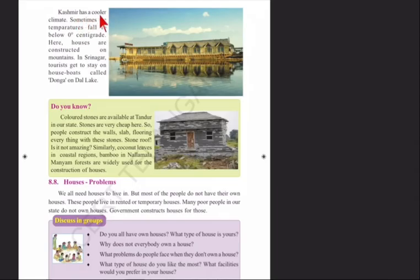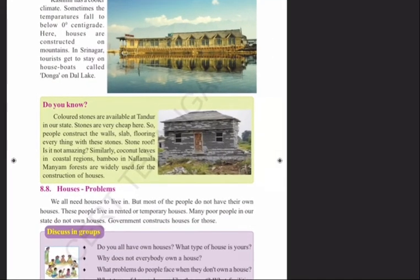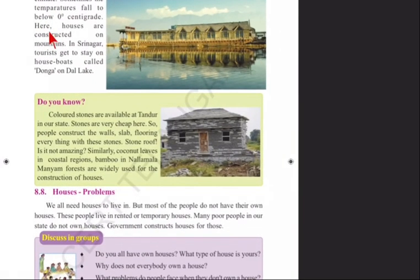Kashmir has a cooler climate, and sometimes temperatures fall below 0 degrees centigrade. Houses are constructed on mountains here. In Srinagar, tourists get to stay on houseboats called Dhonga on Dal Lake.